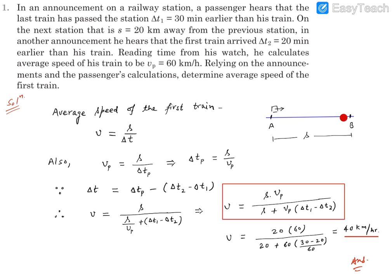There will be some time taken by this passenger's train that is Tp, and the train which has been announced was 30, has left 30 minutes earlier from station A and has reached station B 20 minutes earlier. That basically says that the first train is taking 10 minutes more time as compared to the time taken by the person's train.